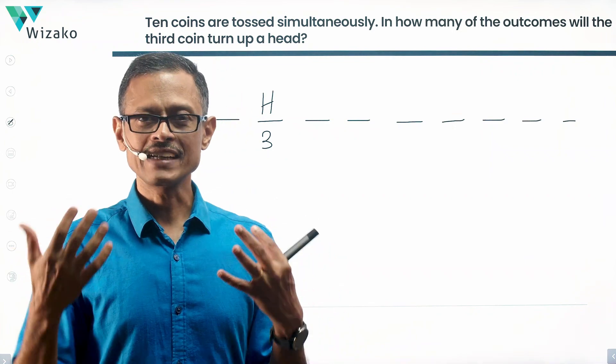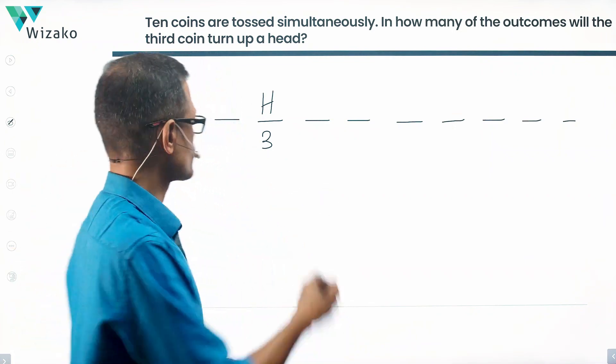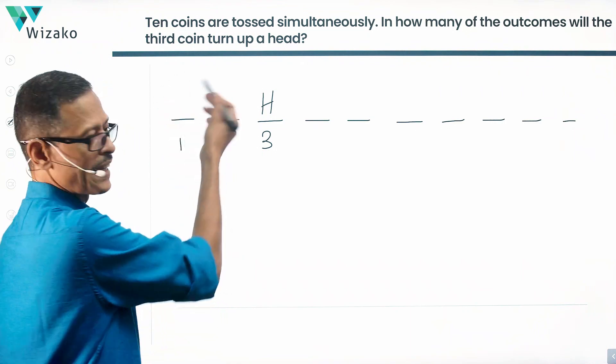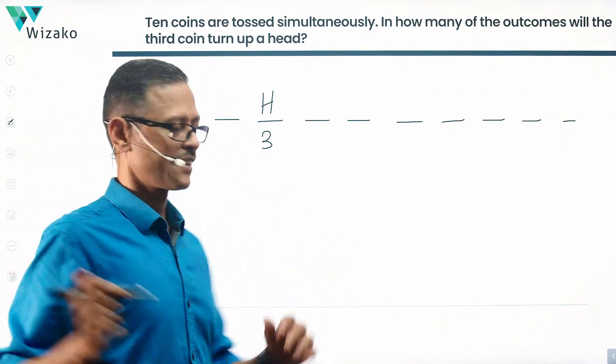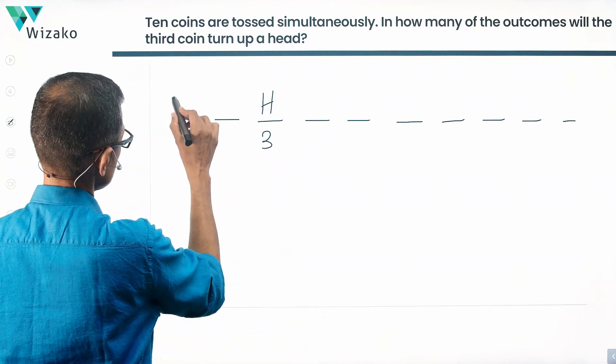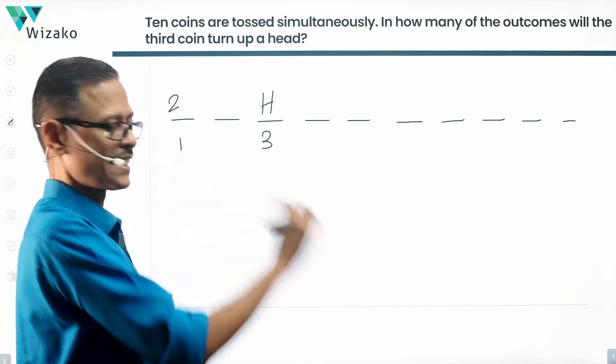Only thing that they want is that the third coin has to be a head. Given that predicament, given that condition, what happens to the first coin? The first coin could be a head or a tail. They don't care. All they want is the third coin to be a head. So what are the possible outcomes of the first coin? It could turn out to be a head or a tail. They're okay with either.